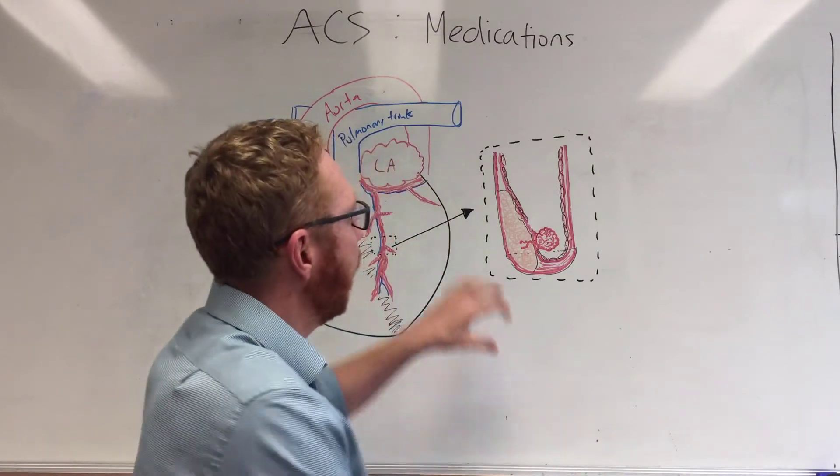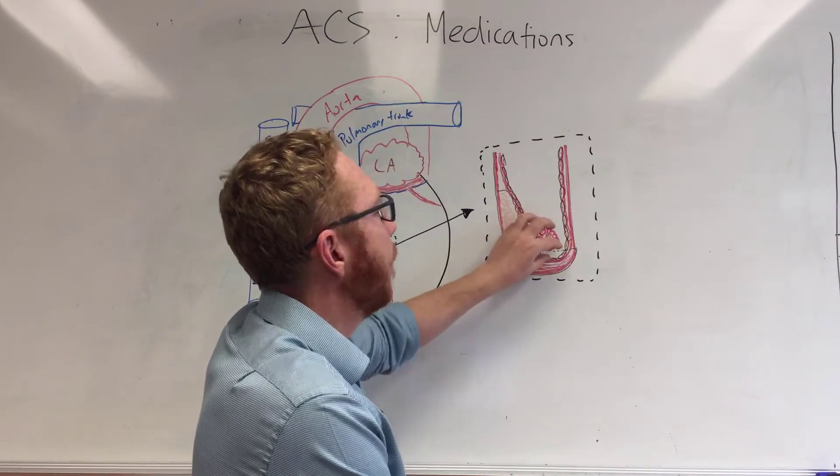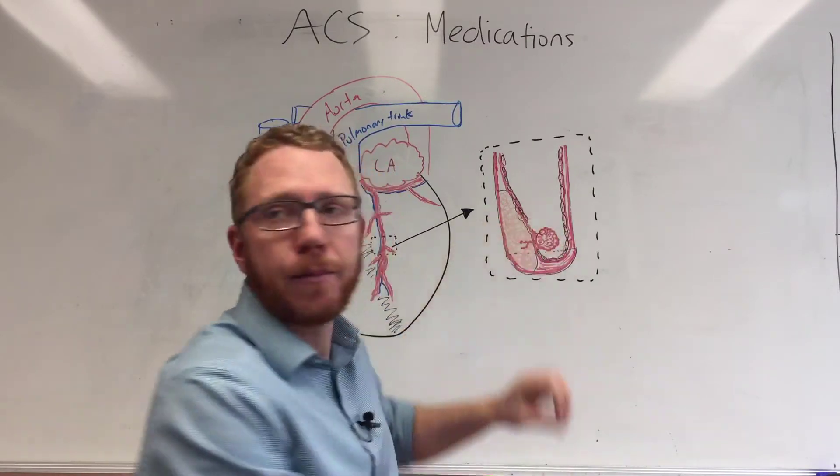Heparin comes and actually stabilizes the clot. So it turns prothrombin to thrombin and that makes that platelet aggregation more stable.